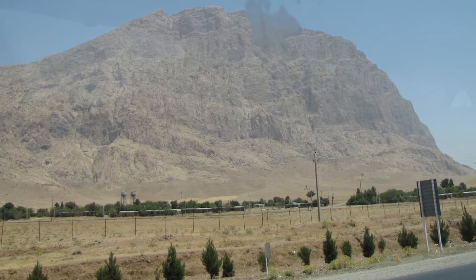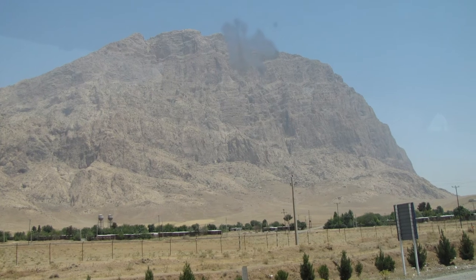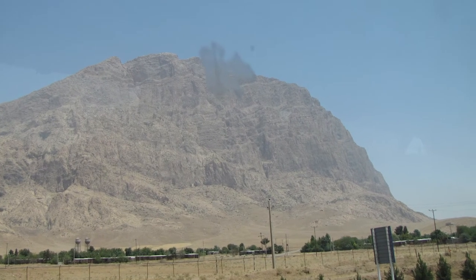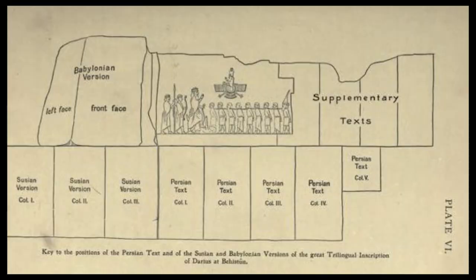The Behistun inscription is a multilingual inscription and large rock relief on a cliff at Mount Behistun in the Kermanshah province of Iran, near the city of Kermanshah in western Iran, established by Darius the Great. It was crucial to the decipherment of cuneiform script, as the inscription includes three versions of the same text written in three different cuneiform script languages: Old Persian, Elamite, and Babylonian, a variety of Akkadian.